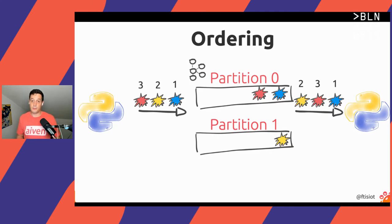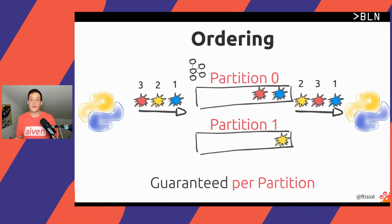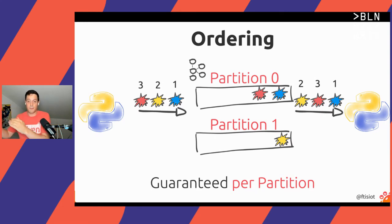Why is that? Because when we start using partitioning, we have to give up on global ordering. Kafka ensures the correct ordering of events only per partition. When we use partitions, we have to think about which ordering we care about. In the case of pizza orders, it's a good example to use the restaurant name as the key, because we care about whether client A made the order before client B at the same restaurant, but we don't care about ordering across different restaurants.